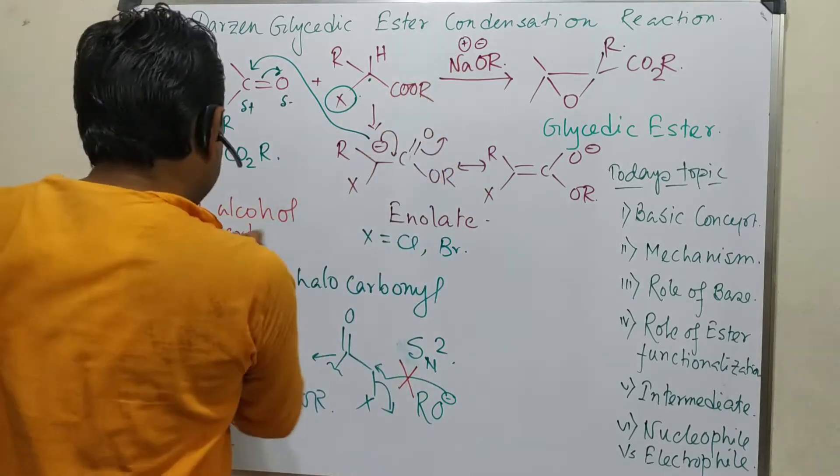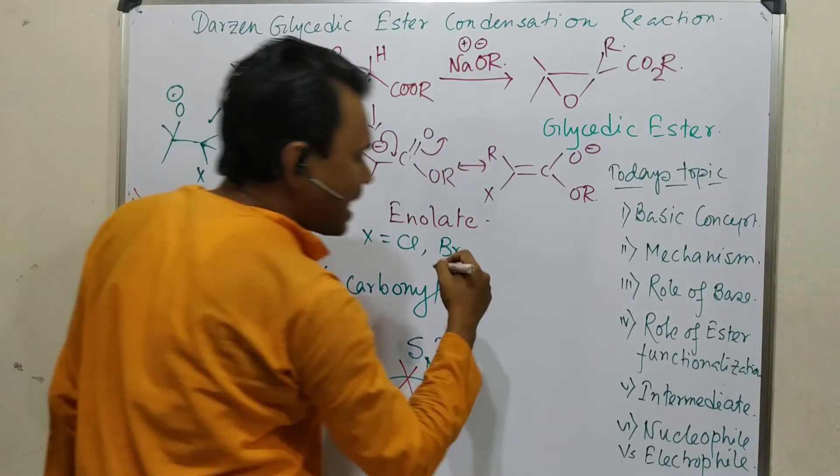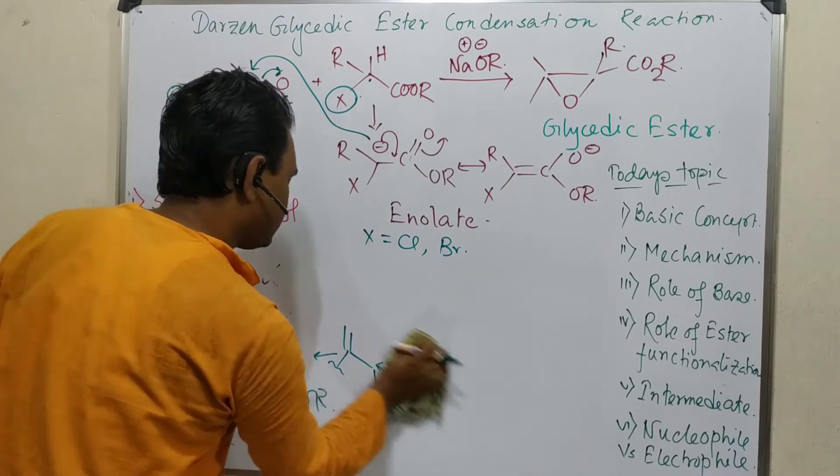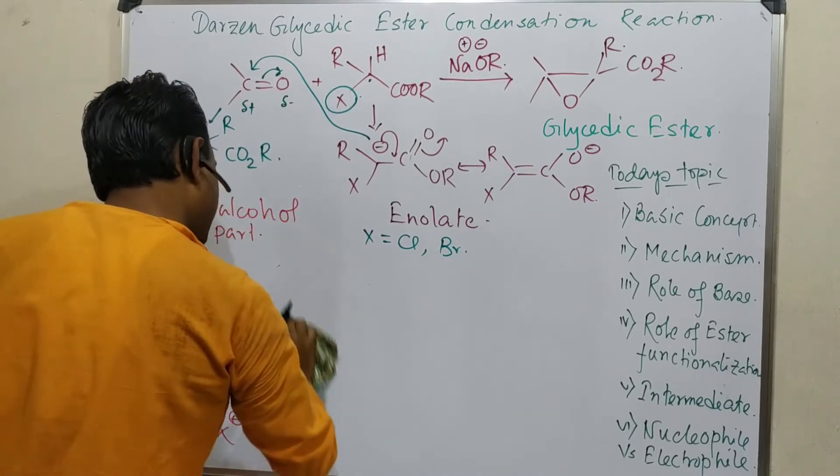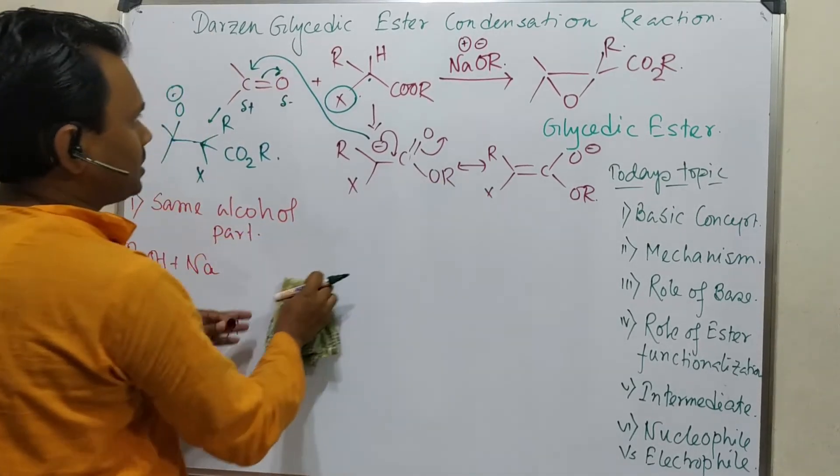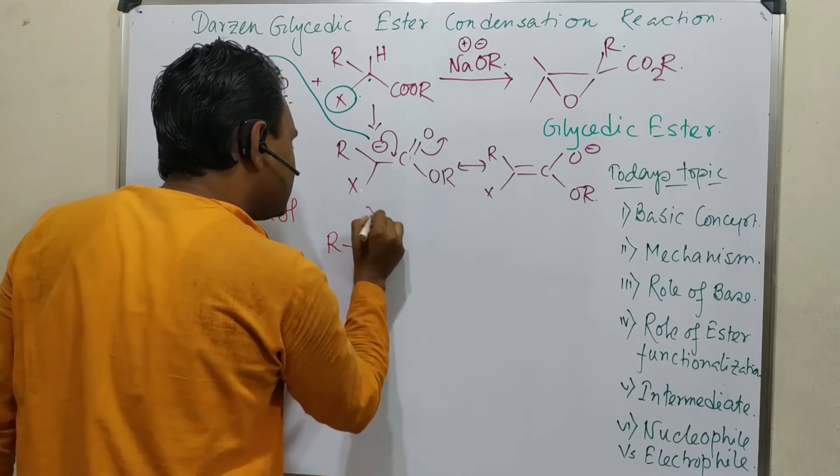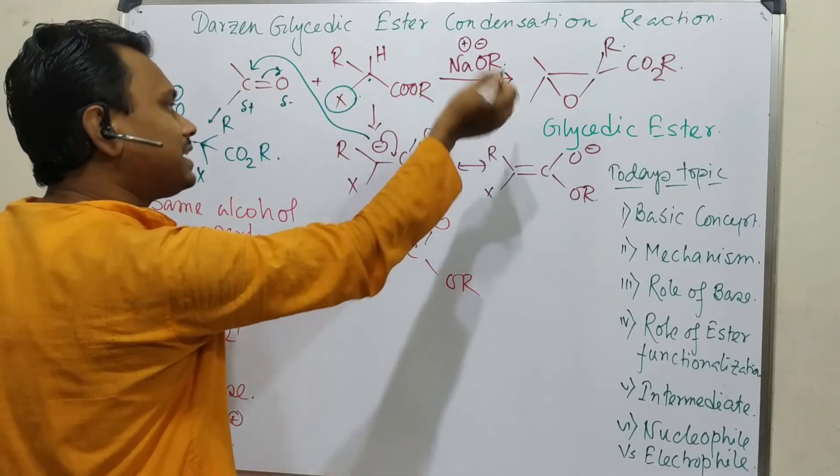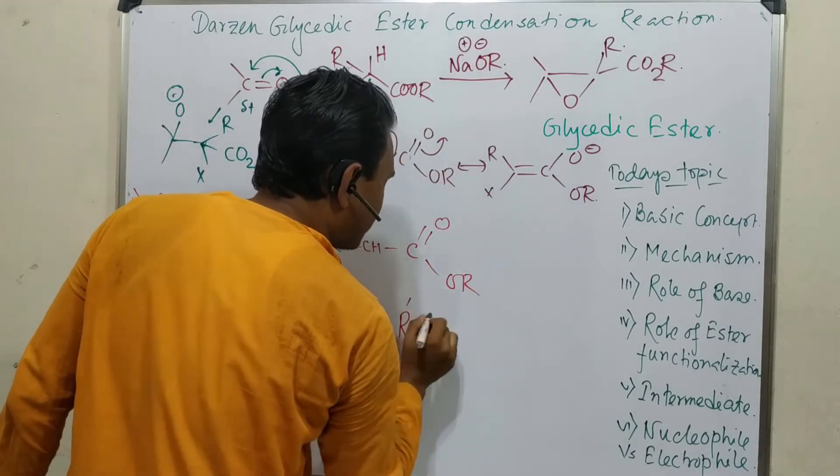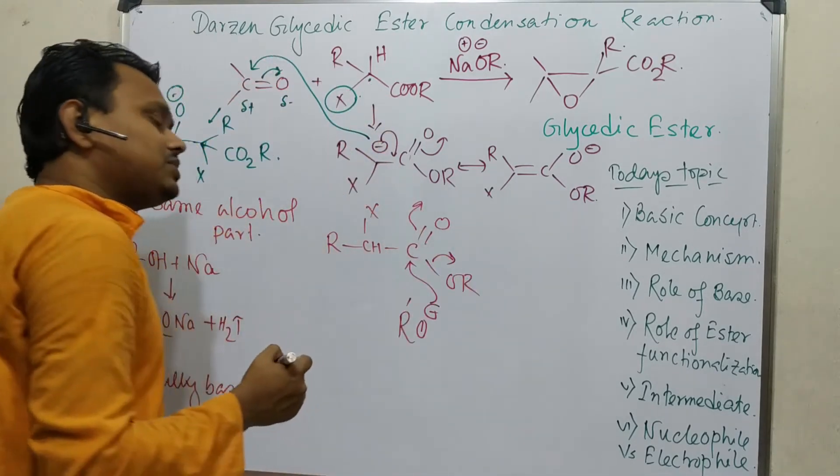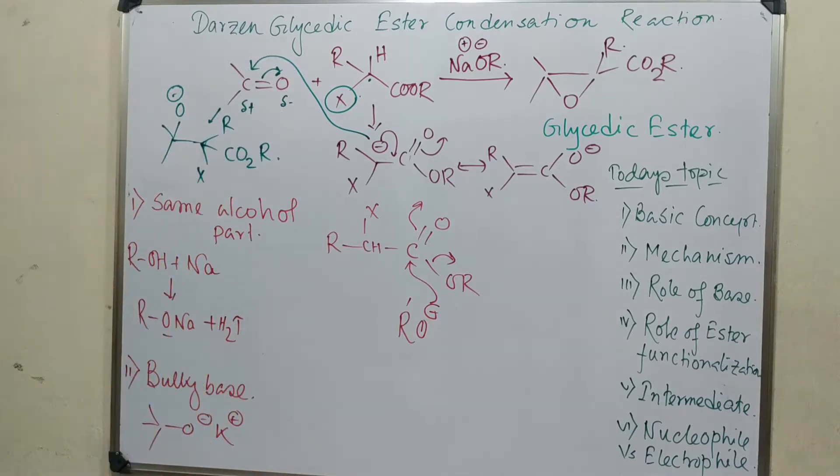And another thing: why this same alcohol? Because there is another chance of cross-esterification. What do I mean? Cross-esterification means that ester will react with another alcohol to prepare another kind of ester. Means, for example, here this is X-CH-CO2R, so this OR could be... So let's consider we are taking RO prime as the base. So what can happen? It can come and eliminate. Entropically this reaction is possible. And actually it depends on the substitutions.